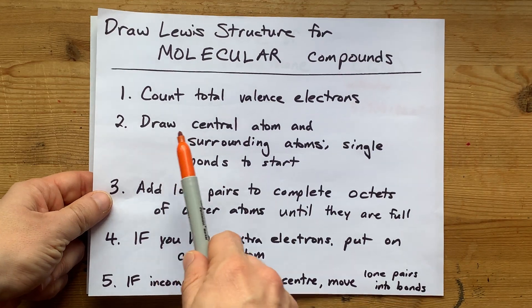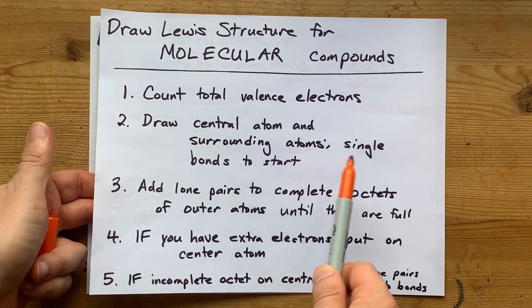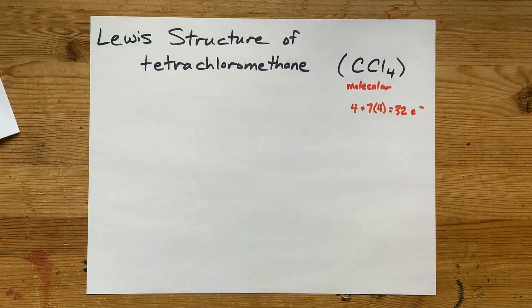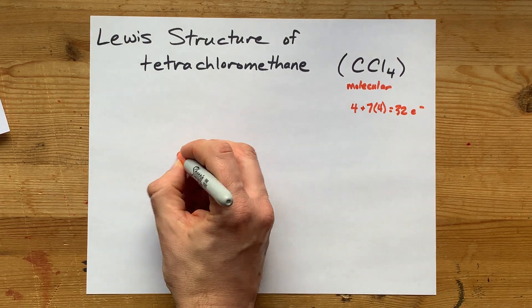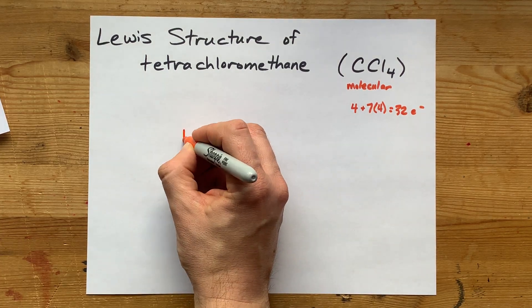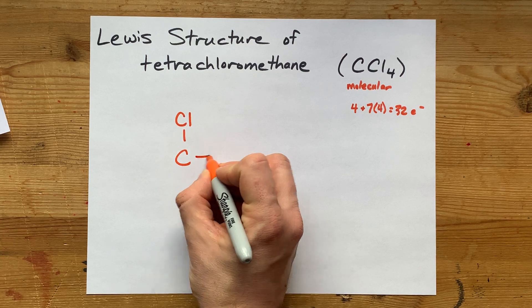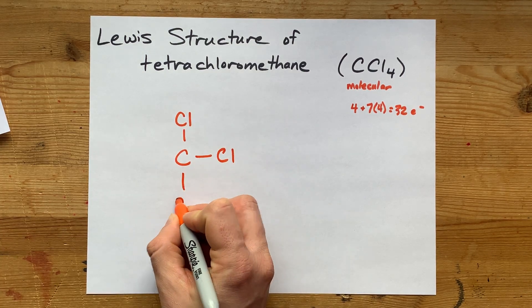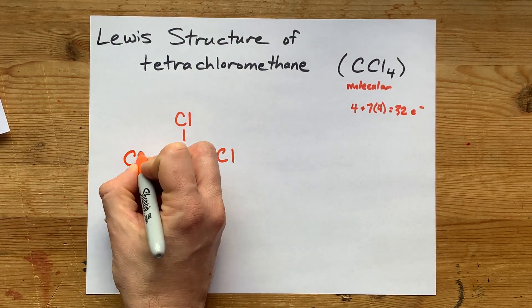Next, draw the central atom and the surrounding atoms and put single bonds between them all to start with. So here's my carbon. I'm going to single bond it to a Cl there, and a Cl there, and a Cl there, and a Cl there.